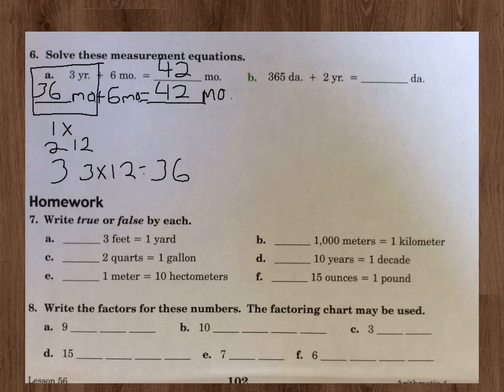Number 7, it's asking us to write true or false by each. 3 feet equals 1 yard, that's true. 1,000 meters equals 1 kilometer, that is true. 2 quarts equals 1 gallon, that's false. 4 quarts equals a gallon. 1,000 meters equals 10 hectometers. D, 10 years equals 1 decade, that's true. E, 1 meter equals 10 hectometers, that is false. F, 15 ounces equals 1 pound, no. 16 ounces would, not 15.